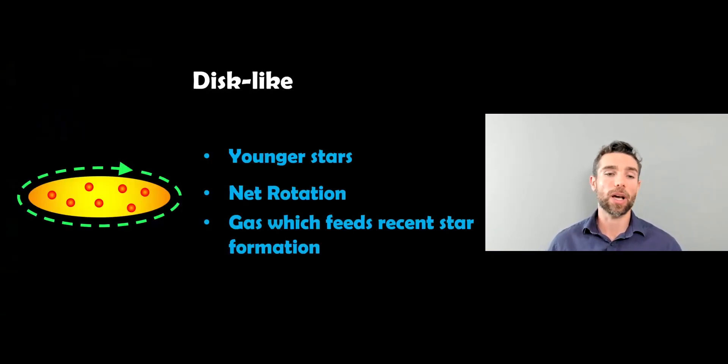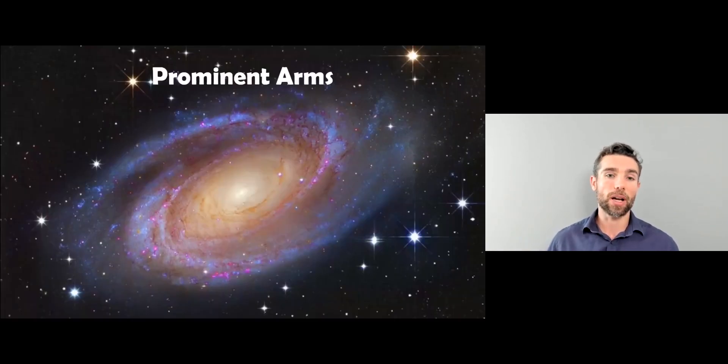So that's general spiral galaxies. They're also disk-like, so that means they are disk-like in shape and they have a net rotation. They rotate in a plane. They have younger stars and that gas then feeds the recent star formation. This is another key difference compared to elliptical galaxies, which typically are more spherical and don't necessarily have a net rotation. The stars are more randomly moving inside.